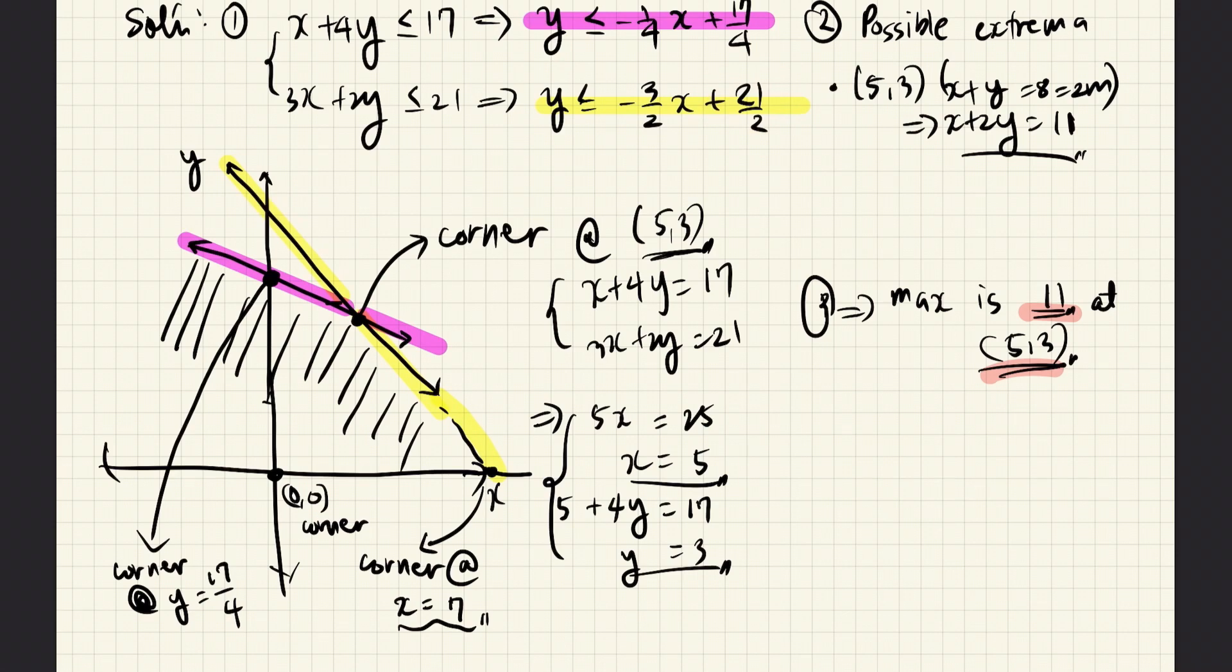And then we also see that the Y-intercept would be 21 over 2 in here, and that the X-intercept which we can obtain by setting Y equals 0 and then solving for X. If we do that we will see that the X-intercept is here at X equals 7. And because this is a less than or equal to sign, we are talking about the area below the yellow line. And therefore the solution to this problem would fall in the area that is common to both of these inequalities. That means this area below the pink and yellow line.